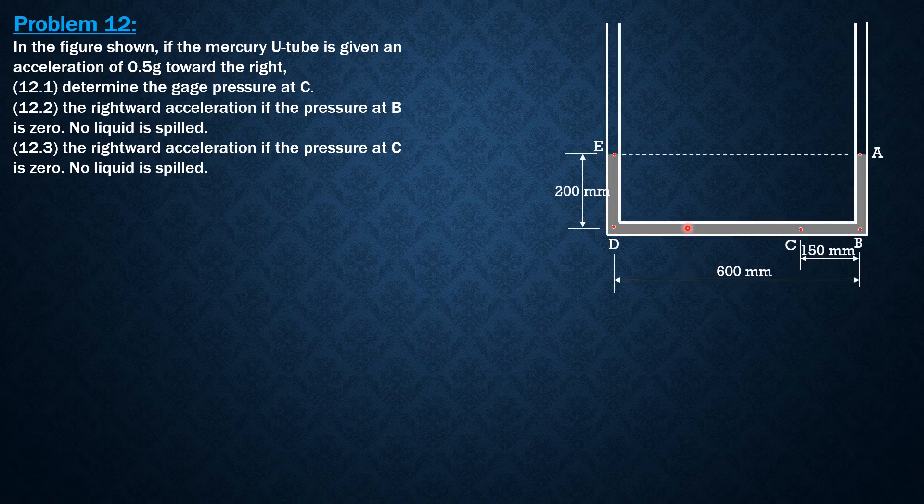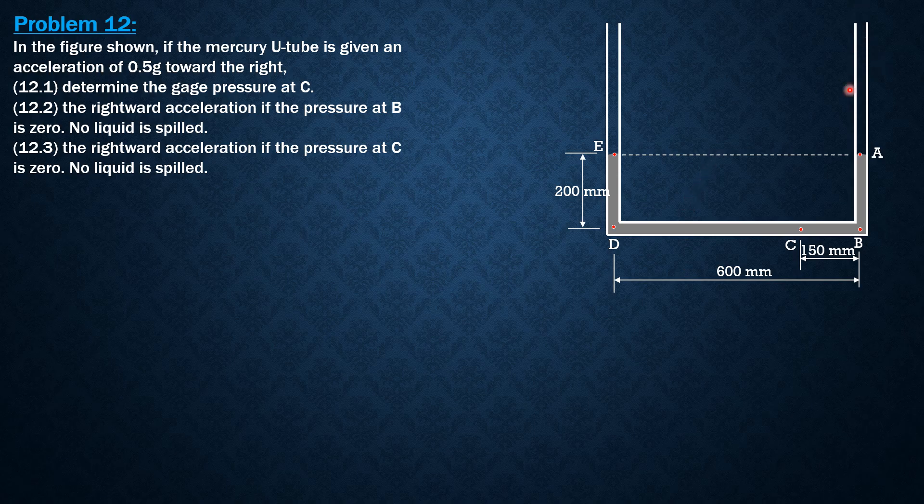This is the open U-tube manometer. A and E are exposed to the atmosphere, so the pressure is atmospheric or 0 gauge.